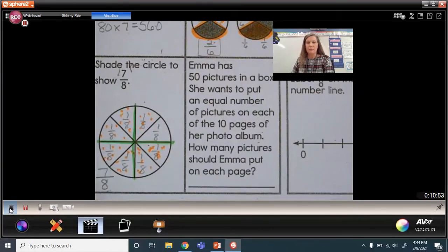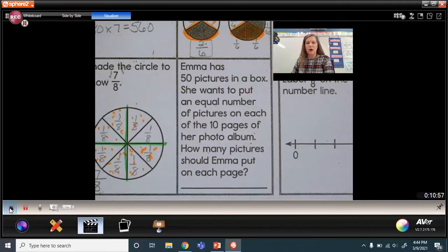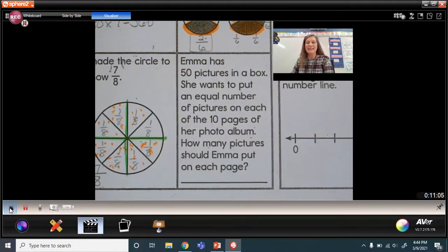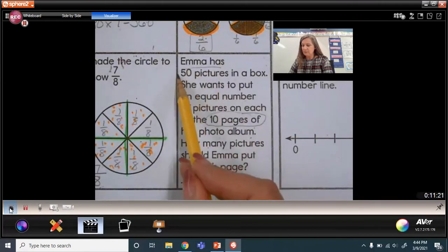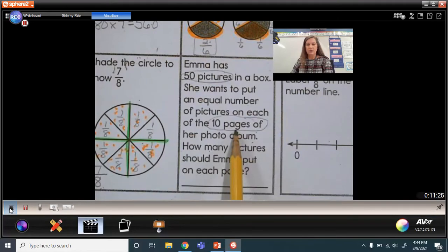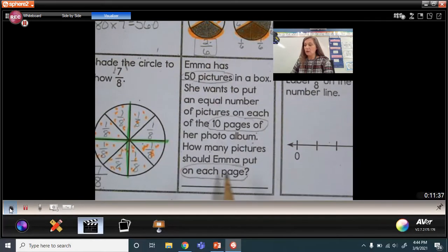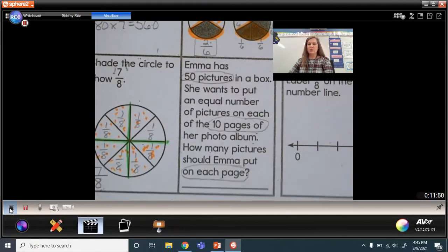It's talking about Emma. Emma has 50 pictures in a box and she wants to put an equal number of pictures on each of the 10 pages of her photo album. How many pictures should she put on each page? So this sounds like you're taking a total, breaking up those pictures onto your pages, which would be groups. You have 50 pictures. You're going to divide them equally onto 10 pages. And they want to know how many are going to be on each page. They're not asking for a total here. That would be multiplication. What they're asking us to do is take this apart, put it into groups, and find out how many is going to be on each page or in each group.